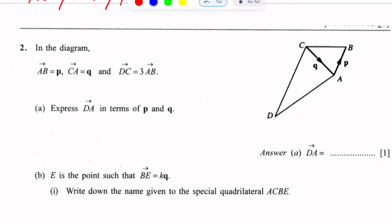So DC is 3 times P. We can write DC vector as 3P.